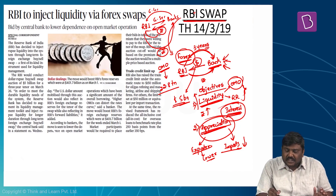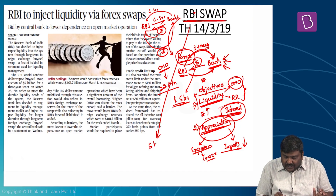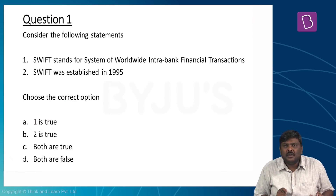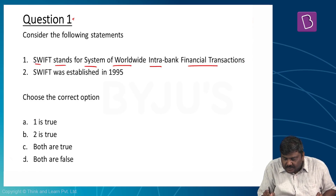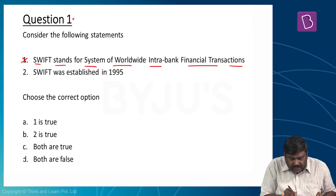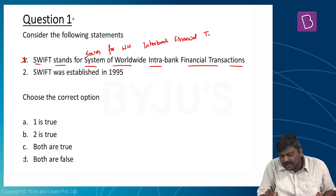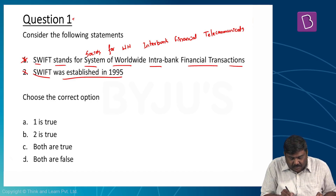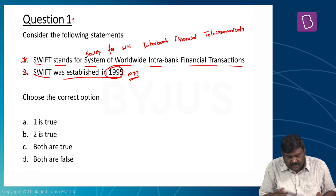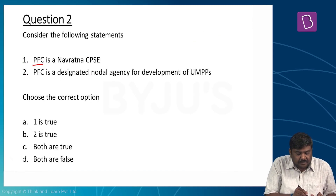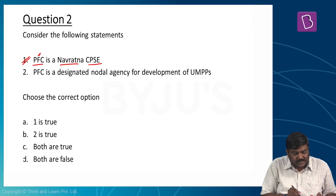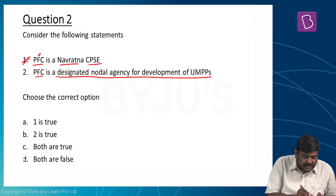Now let's look at the questions. Question one: SWIFT stands for 'System of Worldwide Interbank Financial Transaction' — this is wrong. SWIFT stands for Society for Worldwide Interbank Financial Telecommunications. Second statement: SWIFT was established in 1995 — also wrong; it was established in 1973. So both statements are false, and the right option is option D.